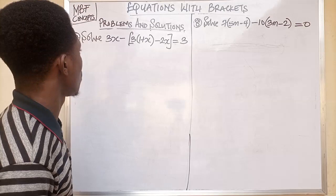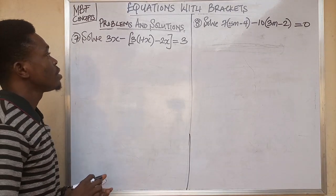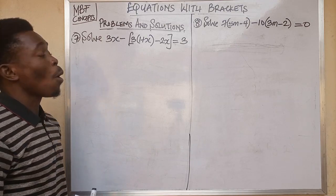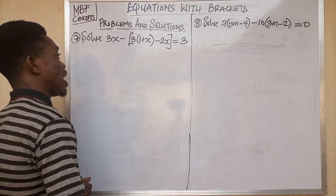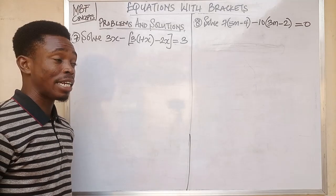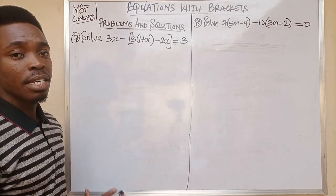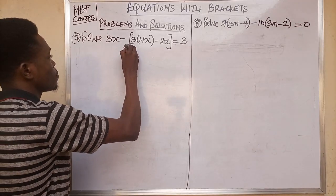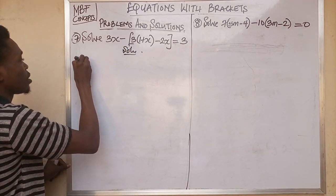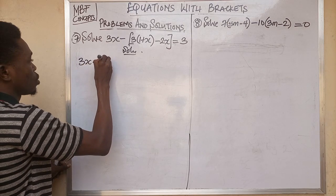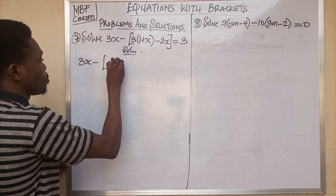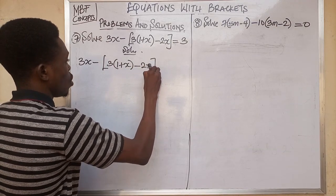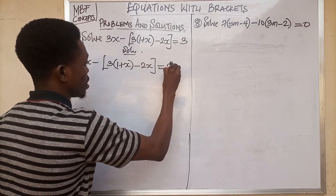On the board we are asked to solve: 3x minus open square bracket, open bracket 3(1+x) close bracket minus 2x, close square bracket, equal to 3. This is still an equation with brackets. We put down our solution and repeat the question: 3x minus [3(1+x) - 2x] = 3.